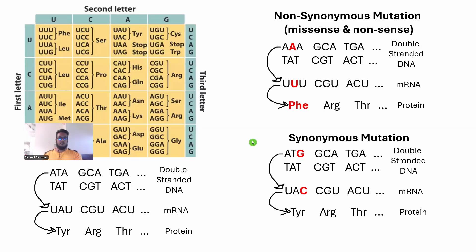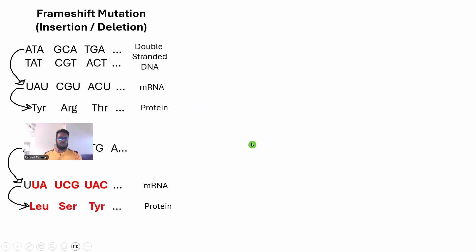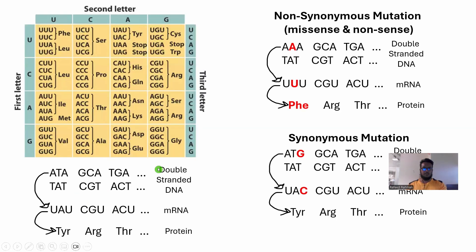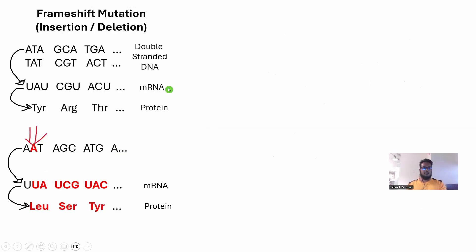Now let's talk about a different type of mutation: frameshift mutation. So far, if you look closely, we have simply been talking about substitution — T is being substituted by A, and A is being substituted by G. It's a kind of substitution or replacement. But there can also be insertion and deletion in the DNA.